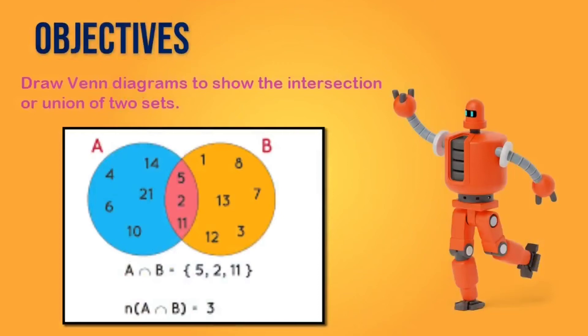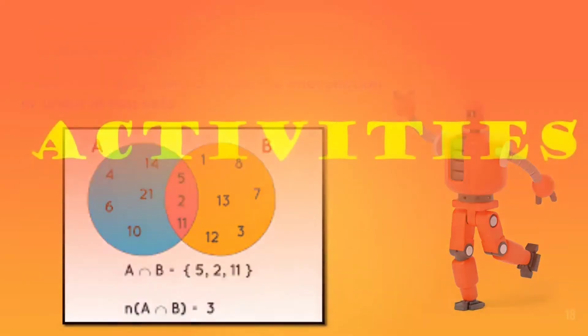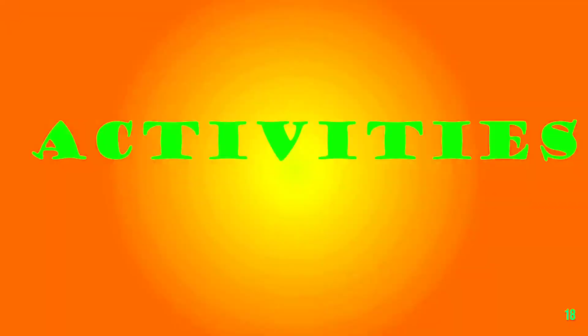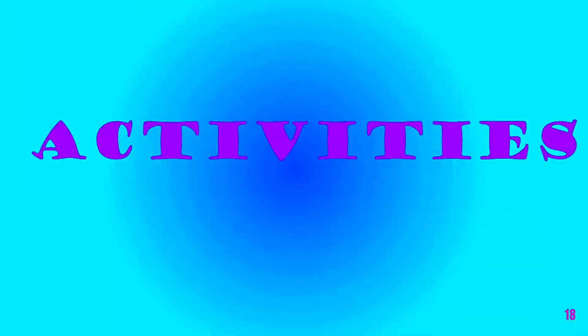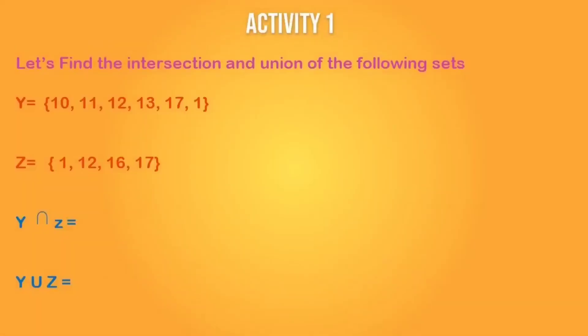Our next objective is to draw Venn diagrams to show the intersection and the union of two sets. We will now be applying our knowledge and creating our own Venn diagrams to show the union and the intersection. To help you revise as best as possible, you will try some examples on your own. You can show your work to your teacher, a friend, a sister, or an older relative who can assist you.